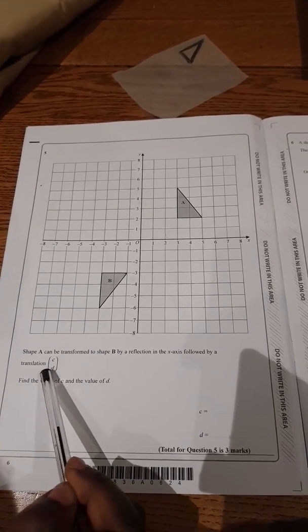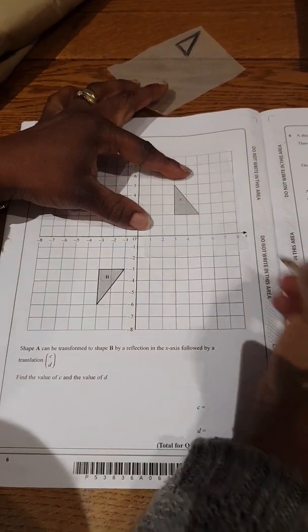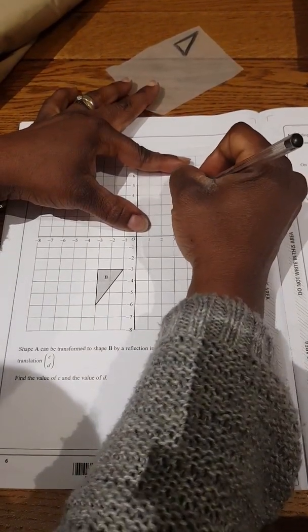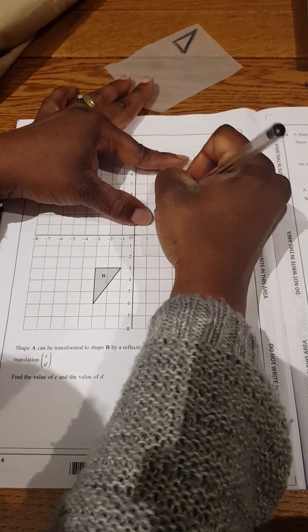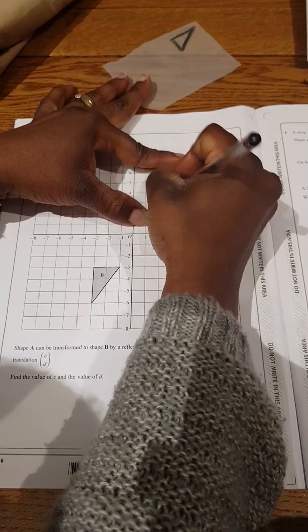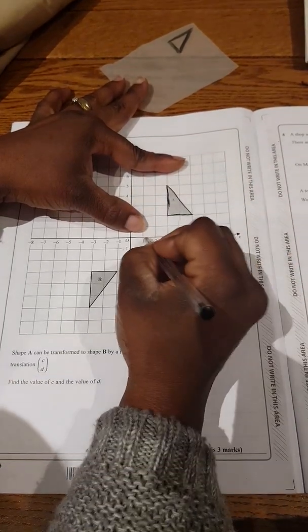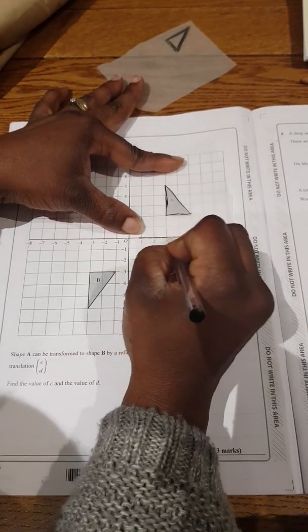Before we can do translation, we need to do the reflection first. So we put our tracing paper on A, we trace it out. And then we put the mirror line, which is the x-axis in this case. We trace that as well.